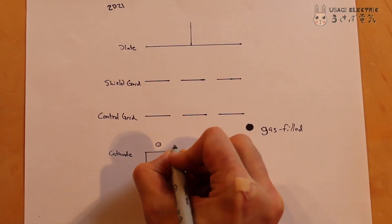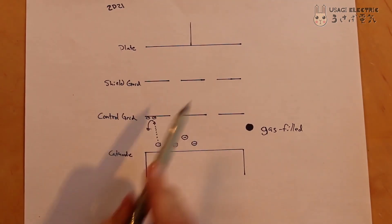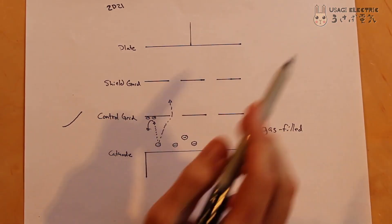When the grid is kept at a negative charge, there is no current flow through the tube. As the grid voltage comes up, electrons begin to flow and the increased current begins to excite the gas inside the thyrotron.